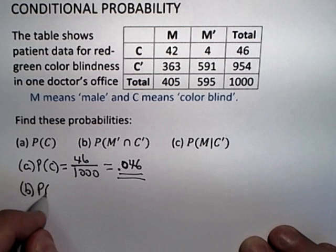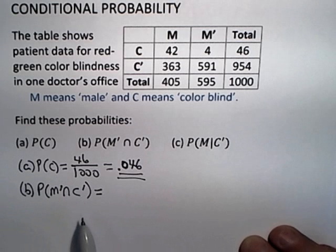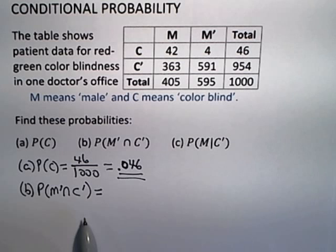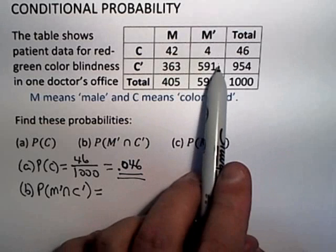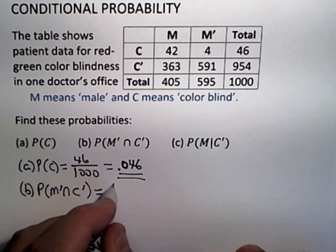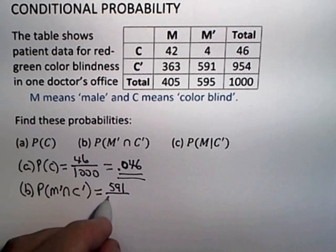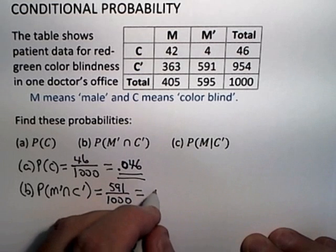Part B says the probability M complement intersect C complement, which is the probability that a patient is not male and is not colorblind. Not male is this column, not colorblind is this column, so there are 591 patients that satisfy that condition of not being male and not being colorblind, again out of the total of a thousand patients in that doctor's practice. If you divide that out and round to three decimal places you'll get 0.591.